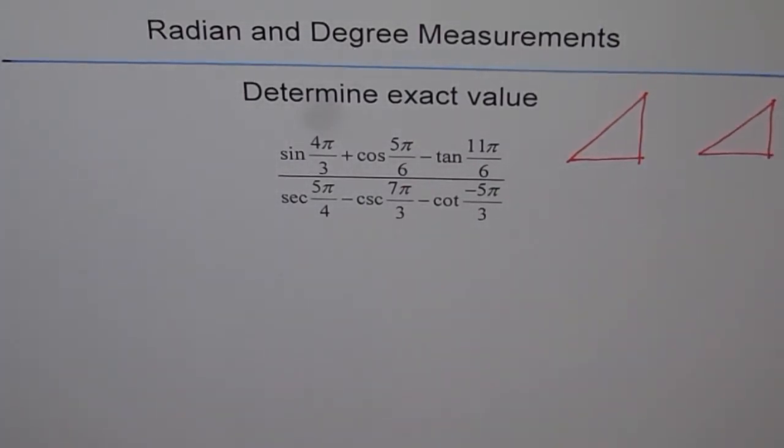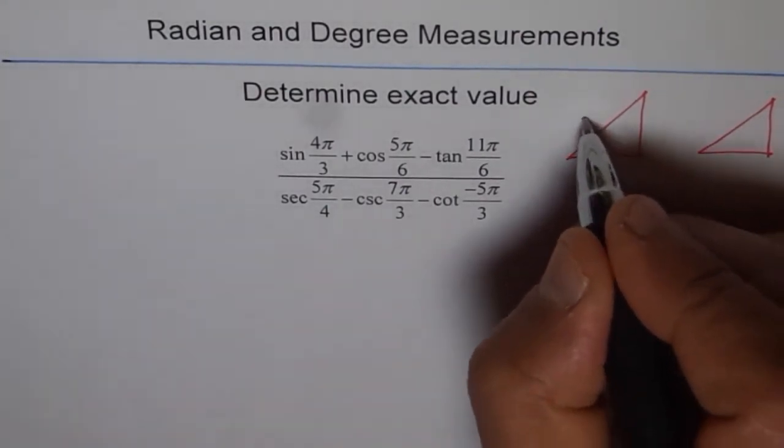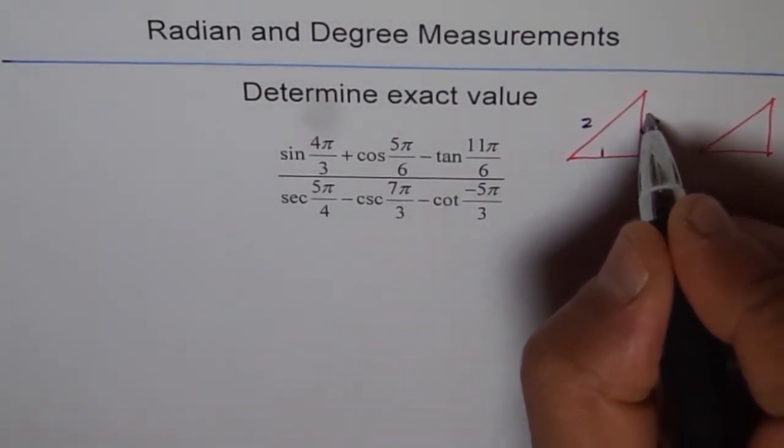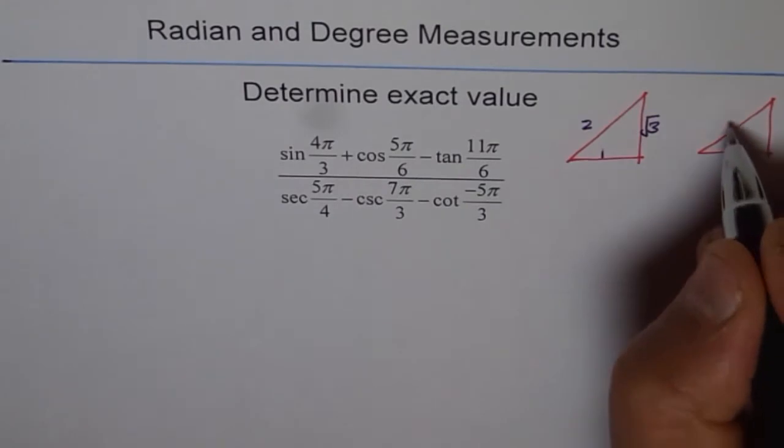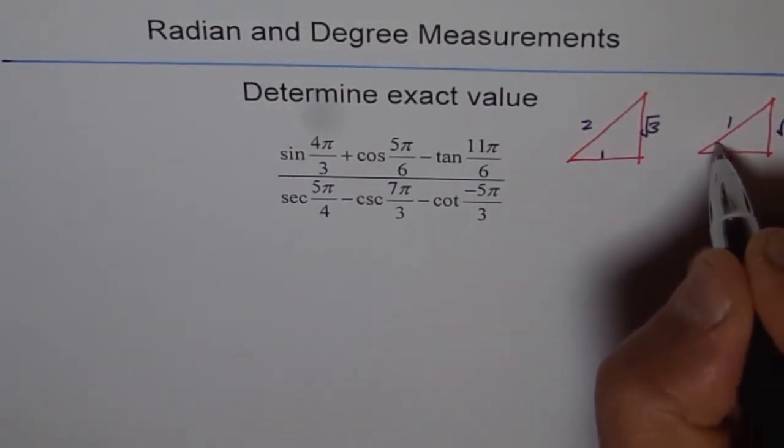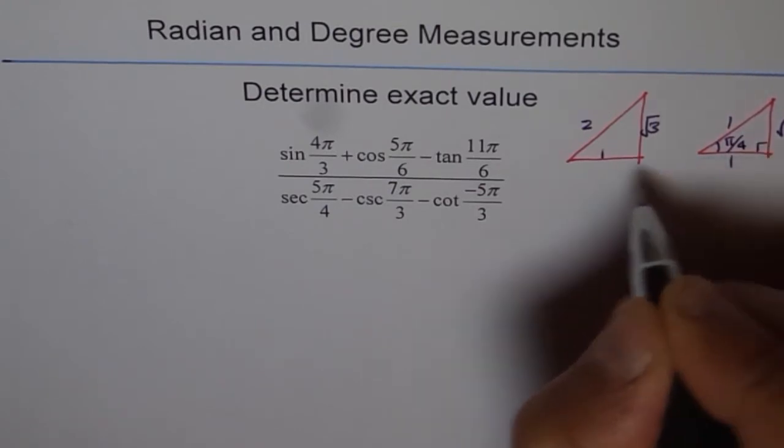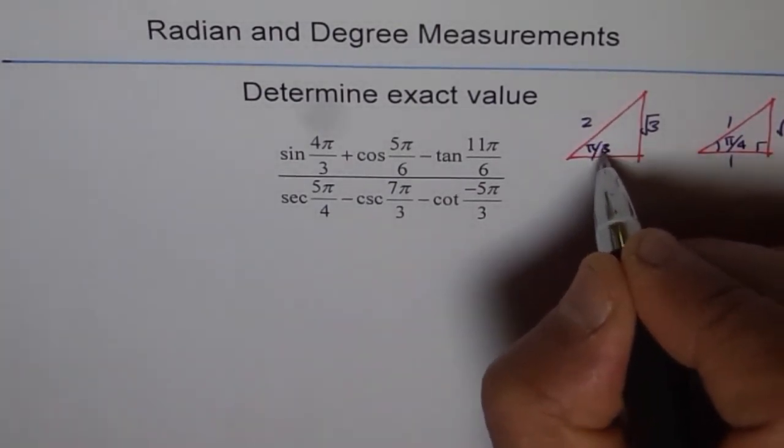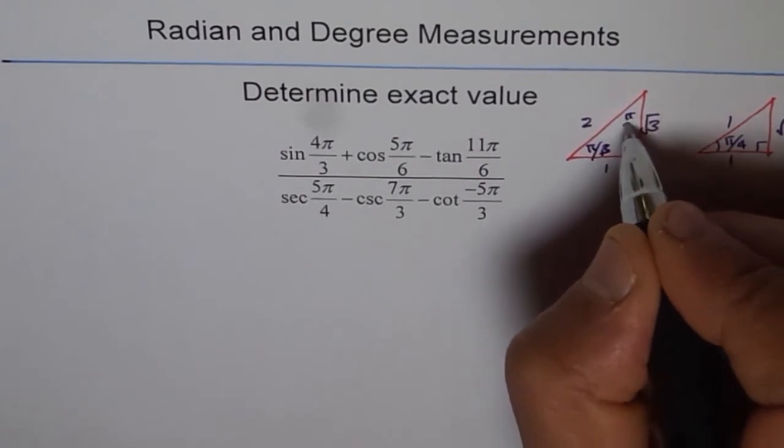Write down your values which are 1, 2, square root of 3, and 1, 1, square root of 2. This is π/4 and this is π/3, let me write here π/6.